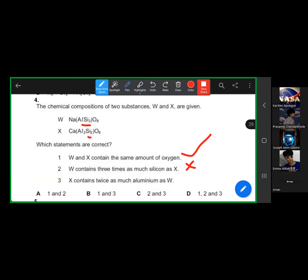The next one says X contains twice as much aluminum as W. Yeah, X contains Al₂, twice of it. So one and three. Are you okay?